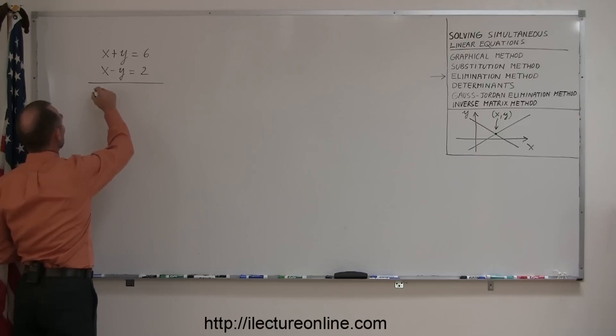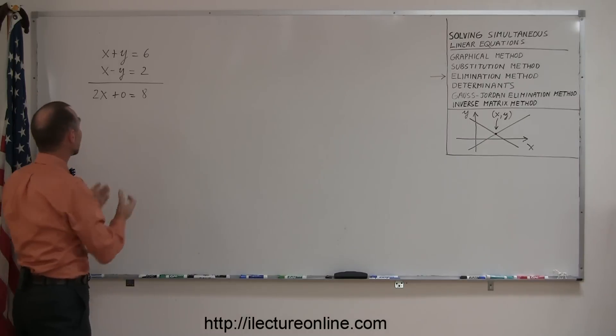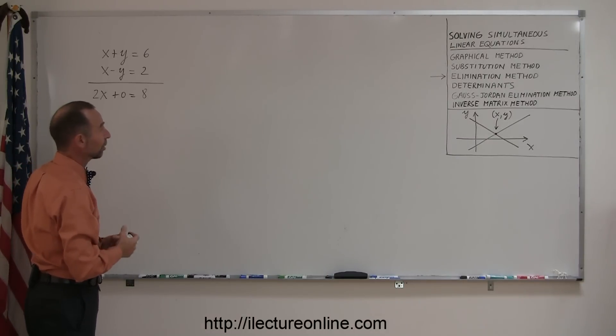x plus x gives me 2x, plus y minus y, that's plus zero, equals six plus two, which is eight. So by combining or adding the two equations, I've eliminated the y. Now I end up with an equation with just one variable, which is easy to solve for x.